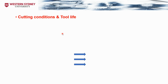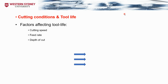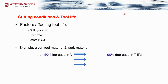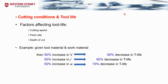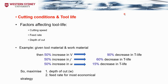Cutting conditions affecting tool life include cutting speed, feed rate, and depth of cut. For a given tool and work material, increasing speed by 50% causes a 90% decrease in tool life; increasing feed rate by 50% causes a 60% decrease; increasing depth of cut by 50% reduces tool life by 50%. The recommended strategy is to maximize depth of cut and feed rate for the most economical effect.